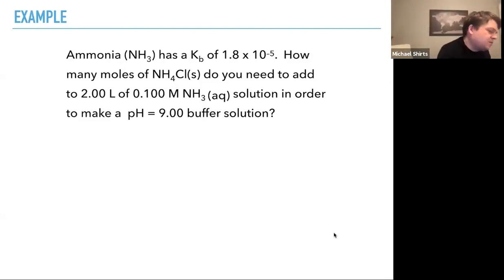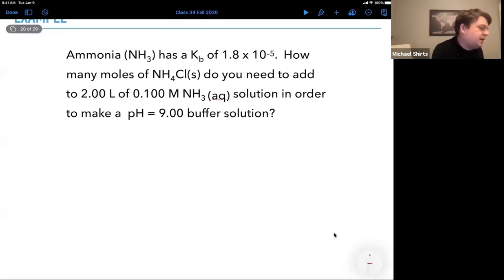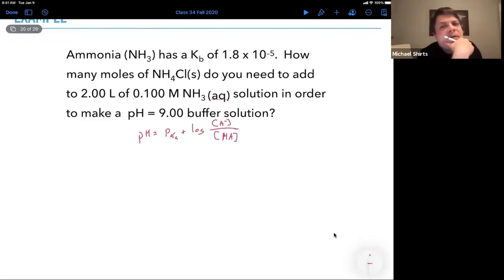Let's write out Henderson-Hasselbalch equations. We've got pH equals pKa plus log of A minus over HA. Now an issue here is that we're given a Kb, not a Ka. So what can we do? Well, we still have an acid, right? We still have ammonium as our acid.